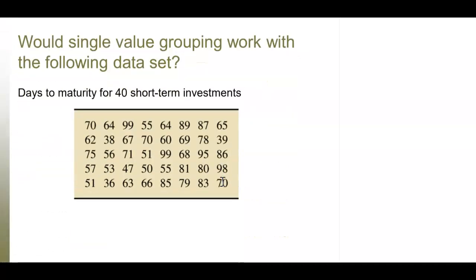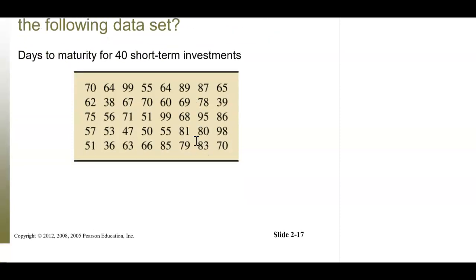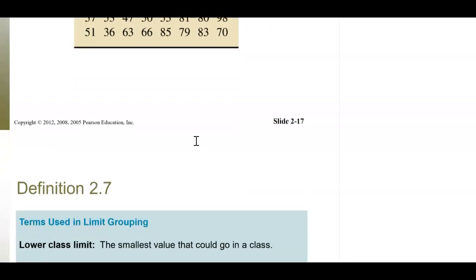But would single value grouping work for data like number of days it takes for a short-term investment to mature? The first took 70 days, the next 64, 99, 55, 64. We have a couple of values in common but not many. Single value grouping really would not work well here — you'd have way too many categories. So when you have too many categories, this is where you bring in limit grouping.